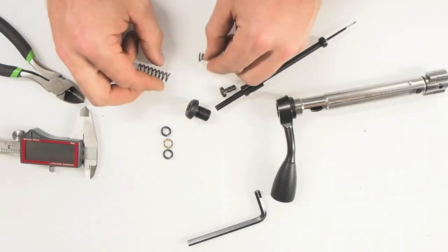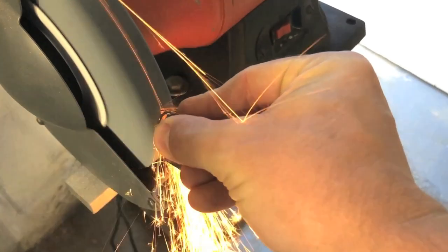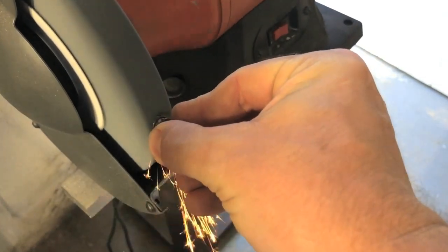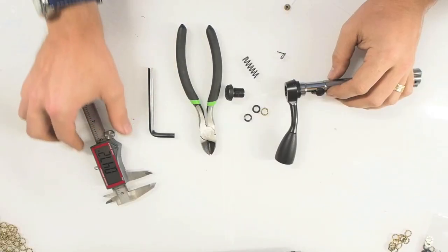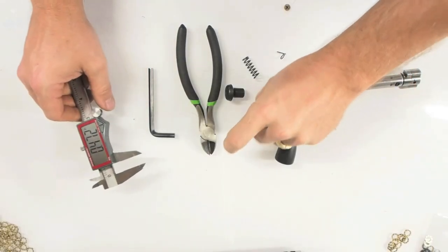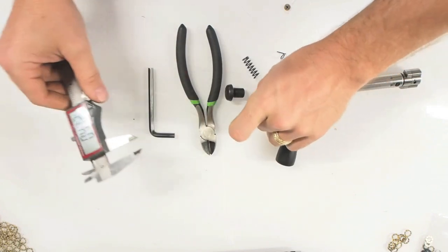The purpose of the calipers is essentially to remove enough of the spring and shorten it so that the additional space that these washers are going to take up is compensated for.